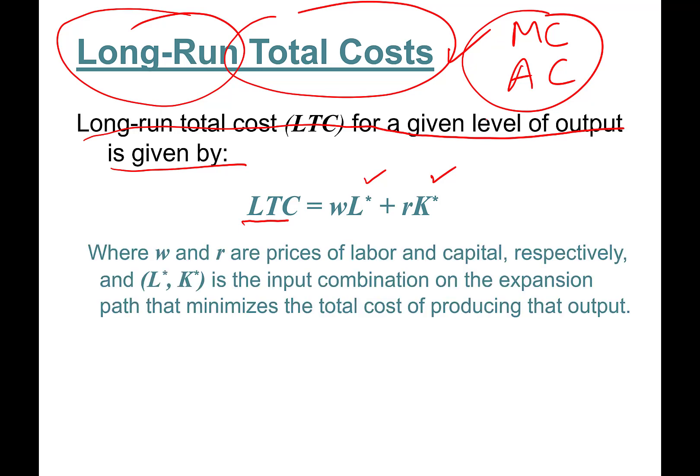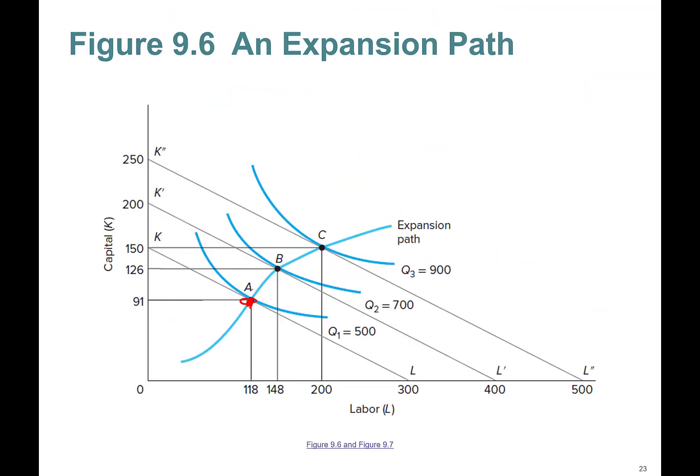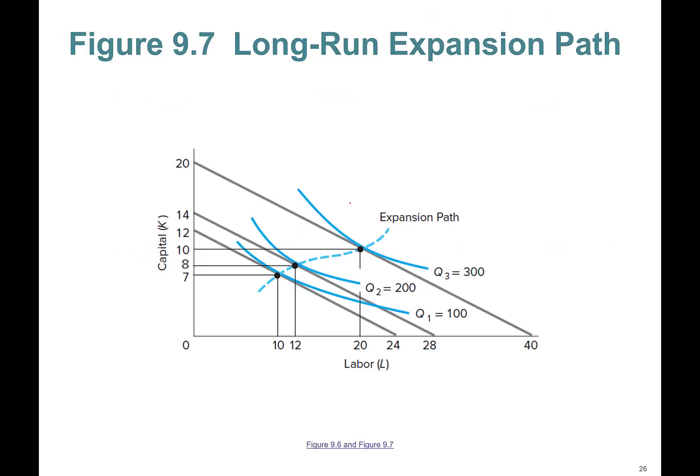W and r are the prices of labor and capital we already know. L* and K* is the input combination on the expansion path that minimizes the total cost of producing that output. These are not random numbers, they are these optimal numbers.